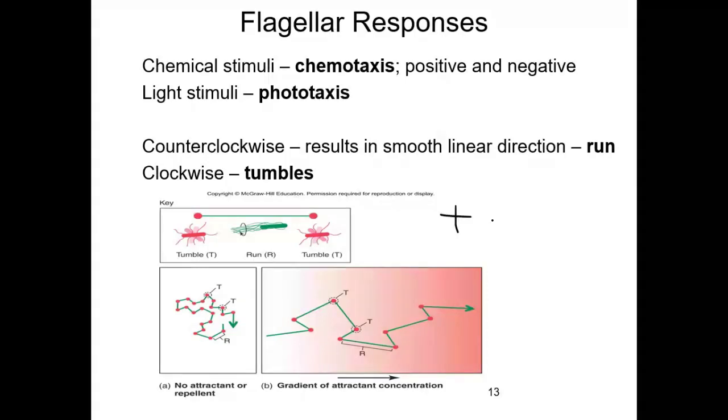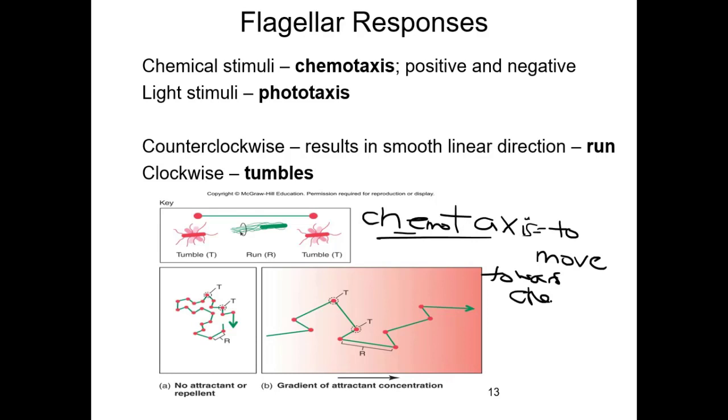Taxi means to move. When bacteria want to move toward a chemical or food source, they do something called chemotaxis. The chemical could be a sugar. Some bacteria need sunlight, so they do something called phototaxis, which means to move toward light.